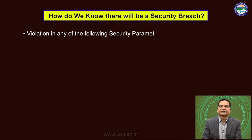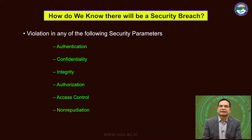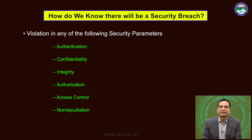The violation of any of the following security parameters leads to a security breach: authentication, confidentiality, integrity, authorization, access control, and non-repudiation. So violation of any one or combination of these parameters leads to a security breach. It is really very tough and challenging for a system administrator, network administrator, or application developer to know whether there will be a security breach or not. In a general sense, if some item is misplaced in a house it can be easily identified, but in the digital world it is very difficult to trace or find out that something is lost unless the total functionality of the system goes down.